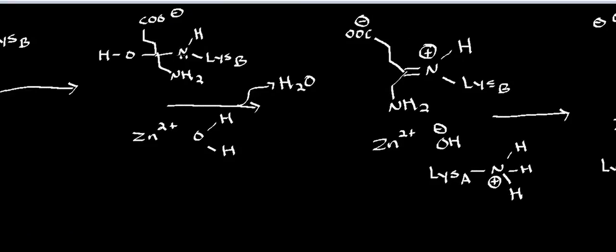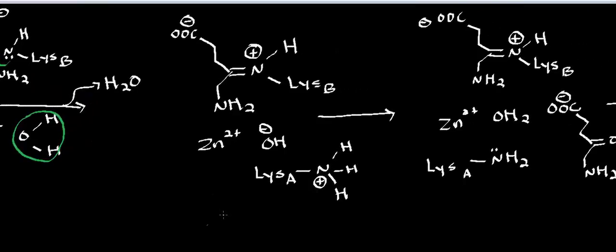This lysine nucleophilically attacks the carbonyl of delta-aminolevulinic acid, generating a tetrahedral intermediate. Then the oxyanion of the tetrahedral intermediate deprotonates the lysine, getting rid of the charges. In the next step, we form a Schiff base — the lone pair on the lysine kicks in here — and the hydroxide attacks the zinc, forcing the water molecule to leave. Now we have a Schiff base with lysine B attached to the first delta-aminolevulinic acid in the active site. Now a second lysine residue, lysine A, is introduced.